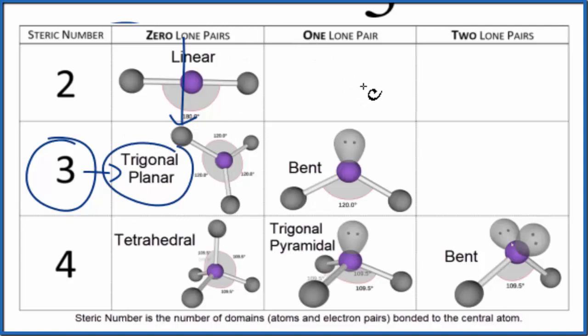We could also use what's called the AXE notation. So A, that's the central atom, that's the aluminum. X, that's the number of atoms bonded to it. We have three fluorine atoms. And E, that's the number of lone pairs. We don't have any lone pairs. So either you memorize that AX3 is trigonal planar, or you look it up. That's another way to figure out the molecular geometry.